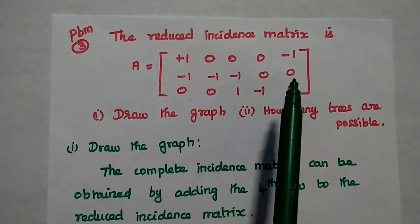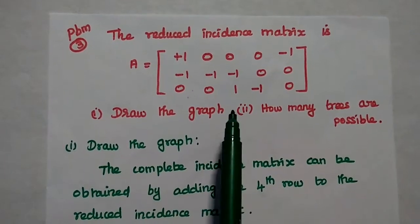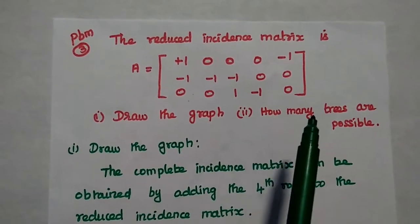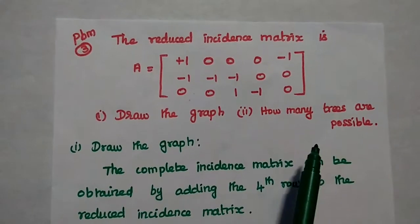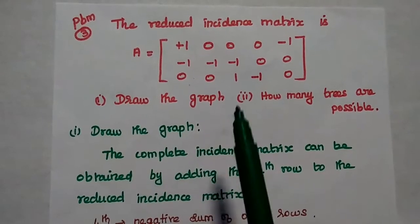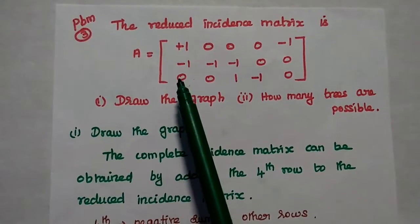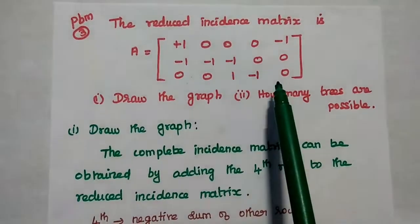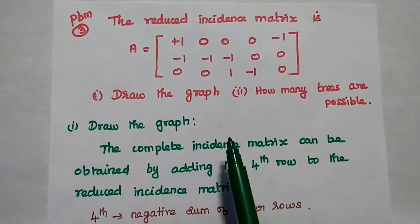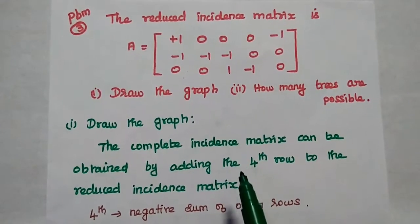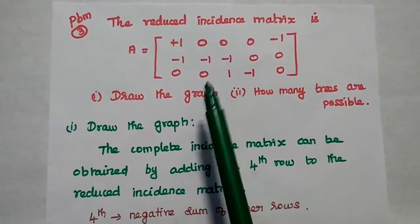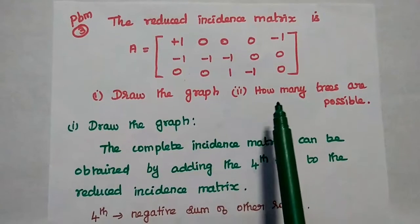The reduced incidence matrix is given in this problem. The question is to draw the graph and to find how many trees are possible. So first we are going to draw the oriented graph from the given data. The given data is a reduced incidence matrix with 3 rows and 5 columns. In order to draw the oriented graph we need to have the complete incidence matrix, but the given data is a reduced incidence matrix.